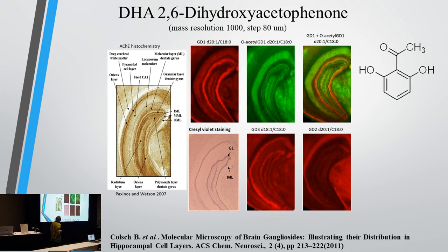This work here — the lab work was done by Benoit Korch, who was a postdoc in my lab at the time. That was the first time we got tremendously excellent images, and we saw GD1, GD2, GM, and GD3. Not only did we see them, but we saw them surrounding individual structures, which tells you how good this matrix really is.